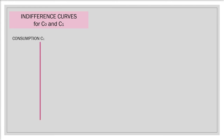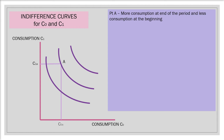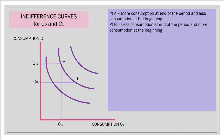We now plot these indifference curves for C0 and C1 with axes of consumption C1 and consumption C0. At point A, there is more consumption at the end of the period, C1A, and less consumption at the beginning, C0A. At point B, there is less consumption at the end of the period, C1B, and more consumption at the beginning, C0B. Point D gives more consumption in both periods and is on a higher utility curve.